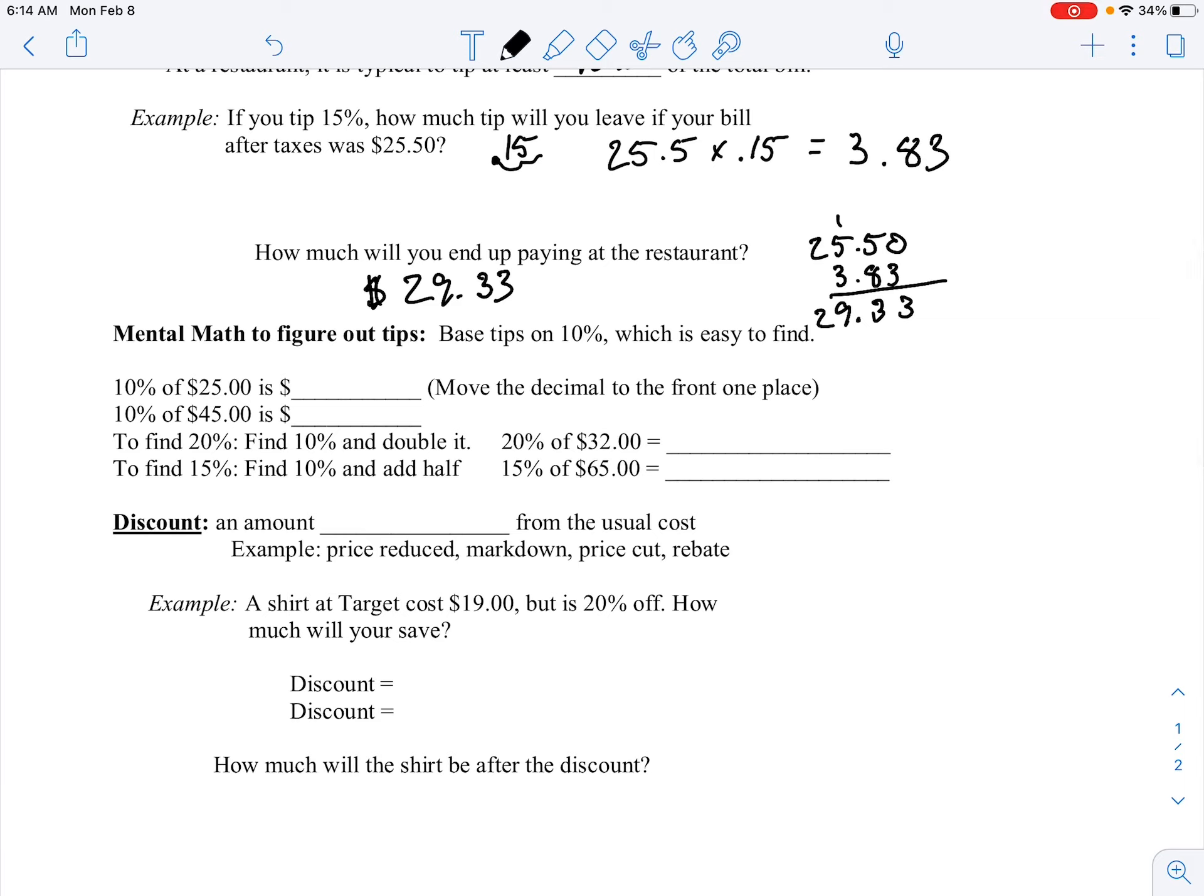So it looks like our total amount after paying that 15% tip will be $29.33. So some easy stuff to help us figure out tips is just base tips on 10%, and that's going to make things much easier to find for us. We only have to move the decimal place to the left once to find 10% percentages.